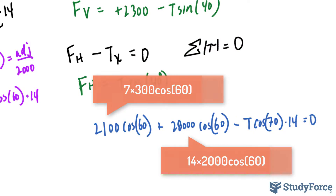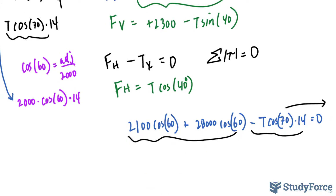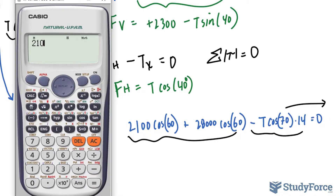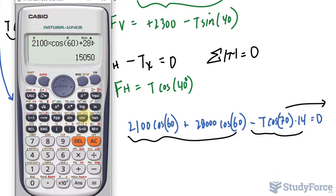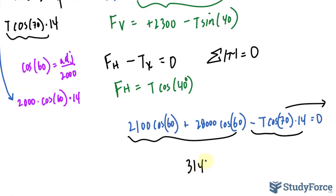We need to solve for T. Taking the expression over to the right side: 2,100 times cosine 60 plus 28,000 times cosine 60 equals 15,050. Dividing both sides by cosine 70 times 14, we get a final answer of 3,143 newtons. That represents the tension.